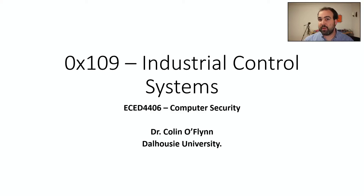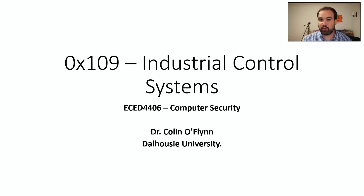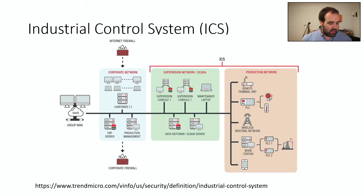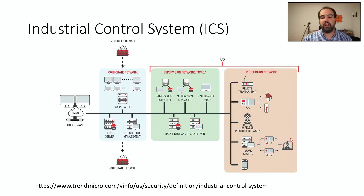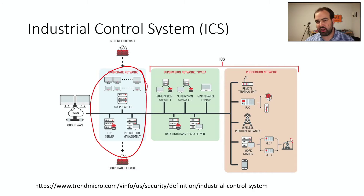Industrial control systems might be another area of interest to you. These are factory and industry type situations that are typically controlling pretty heavy-duty stuff with electronic modules. When we say industrial control system, it actually encompasses a massive amount of infrastructure. At the higher level, as part of a network, you might have a corporate network — part of corporate IT that connects into managers overseeing stuff.